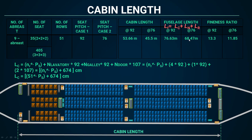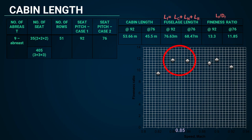Now we will find the fineness ratio, which is the total length of the fuselage divided by the diameter. At pitch 92, fineness ratio is 13.3; at pitch 76, it is 11.85. Comparing with the previously optimized data value of around 11.75, I will choose the nearest value — when seat pitch is 76 and the fineness ratio is 11.85. If the fineness ratio is not acceptable, you need to iterate the cabin design by modifying the dimensions of the seat and the pitch width.